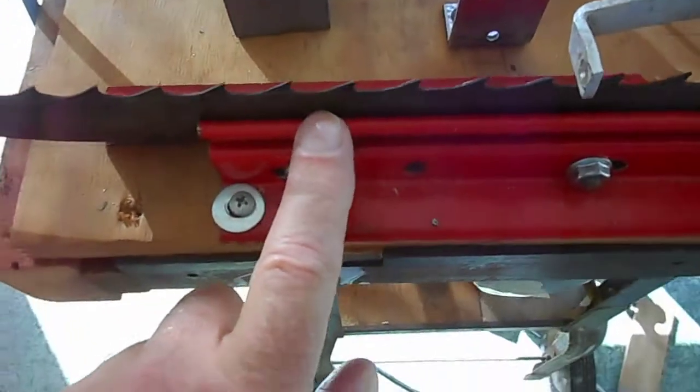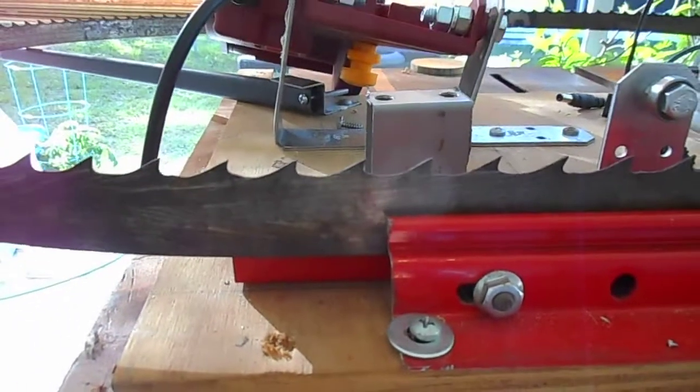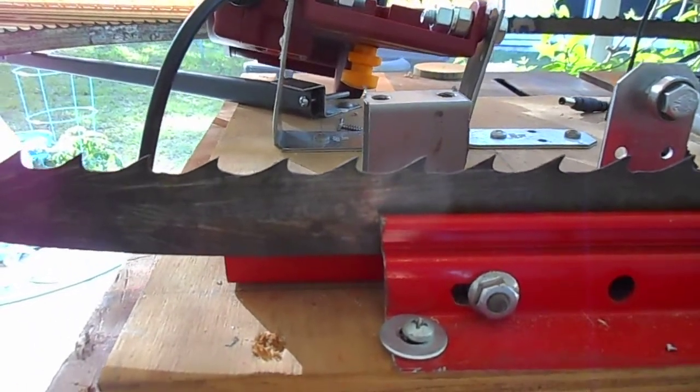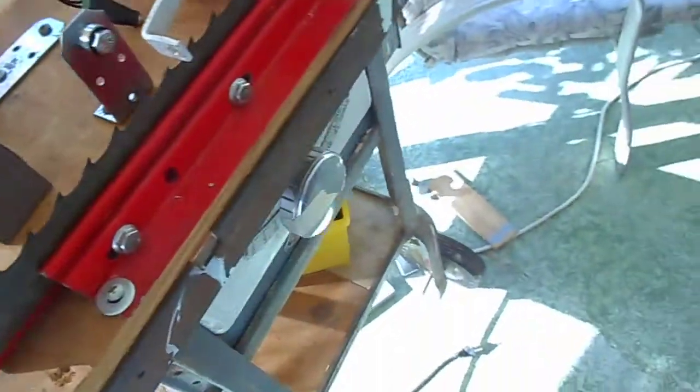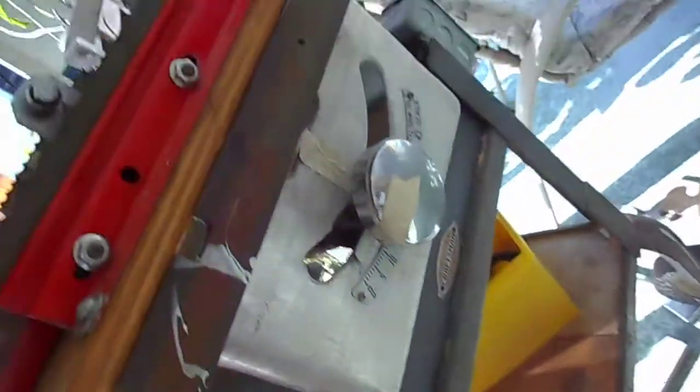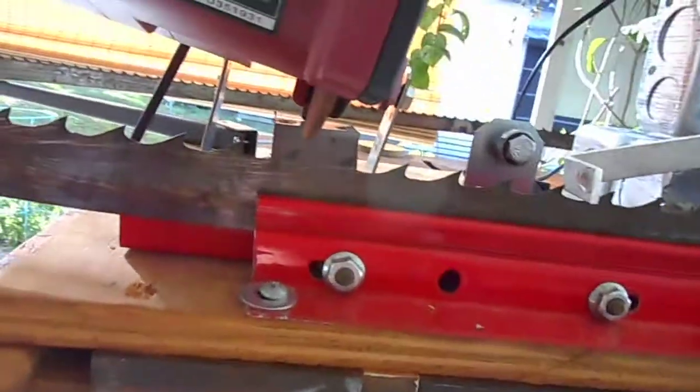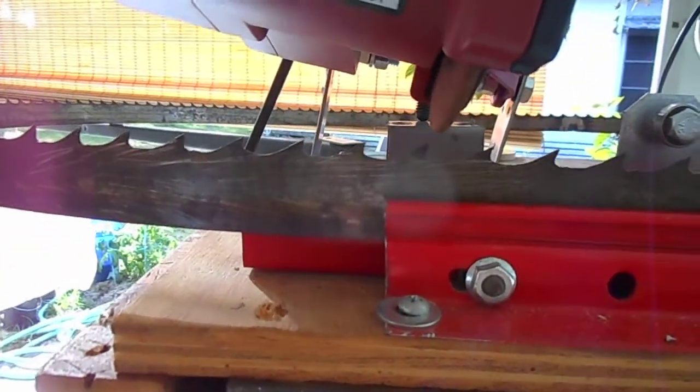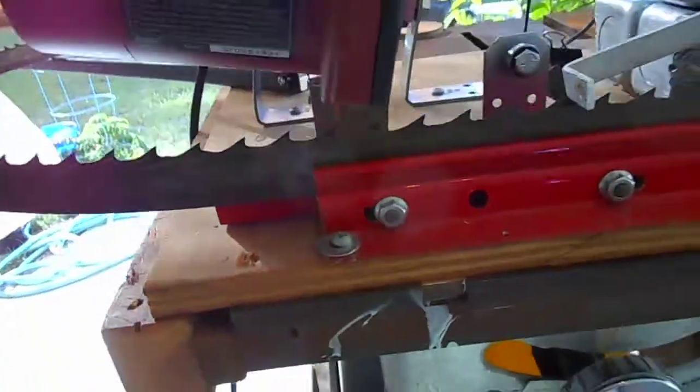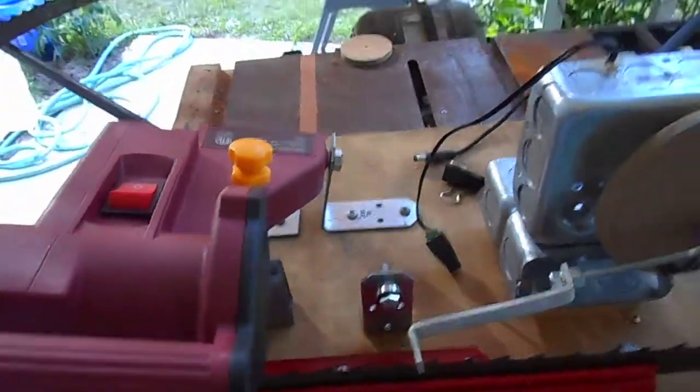That's for the tooth profile, and you can see a little bit of the tooth profile right there. That is so that the wheel comes down and will contact at the proper angle to cut that. So I've got it mounted, that's about all I've done there.